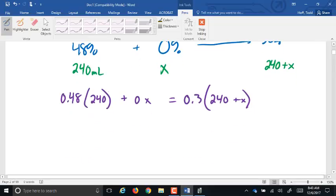So next, we're going to combine on the left side, we can do the 0.48 times 240 is, what's that? 115.2 works for me. Plus 0X, that's just 0, so it's gone. On the other side, we got 0.3 times 240, 72. Plus 0.3 times X is 0.3X.